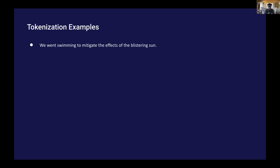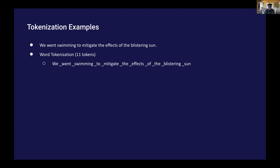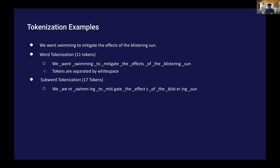I want to give some examples of what I mean by tokenization. Here's an example sentence: 'We went swimming to mitigate the effects of the blistering sun.' Looking at a word tokenization, tokens are separated by white space, each space represented by an underscore — pretty straightforward. A subword tokenization breaks your sequence up into subwords. You can see 'went' is split into two subwords, and likewise 'swimming' — the 'ing' is separated from 'swim.' And 'blistering' is broken up into three subwords. This allows your model to learn the relationships between parts of words. Most English speakers know that 'ing' means you're doing a particular verb, so it allows your model to build understanding of that kind of relationship as well.